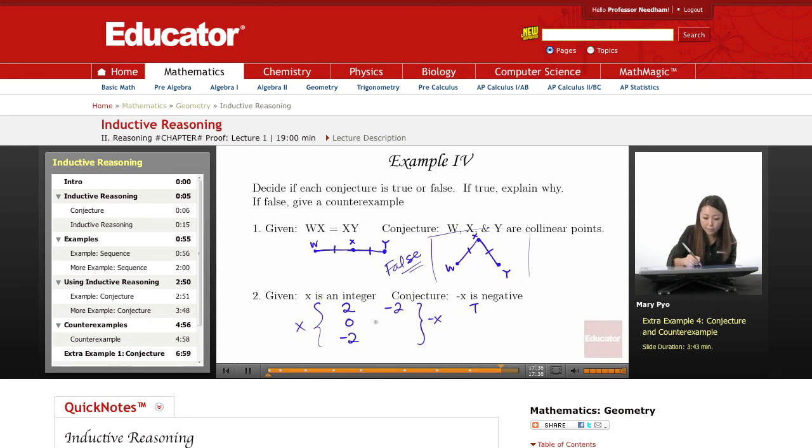What about 0? If I make it negative X, then it would be negative 0, which is just 0. And that's not a negative, right? So this is false.